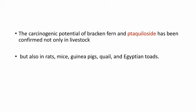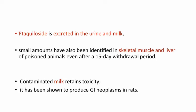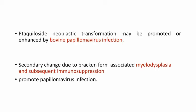The carcinogenic potential of Bracken Fern and ptaquiloside has been confirmed not only in livestock, but also in rats, mice, guinea pigs, quail, and Egyptian toads. Ptaquiloside is excreted in urine and milk; small amounts have also been identified in skeletal muscle and liver of poisoned animals even after a 15-day withdrawal period. Contaminated milk retains toxicity and has been shown to produce GI neoplasms in rats. Ptaquiloside neoplastic transformation may be promoted or enhanced by bovine papilloma virus infection. Secondary changes due to Bracken Fern-associated myelodysplasia and subsequent immunosuppression will promote papilloma virus infection.